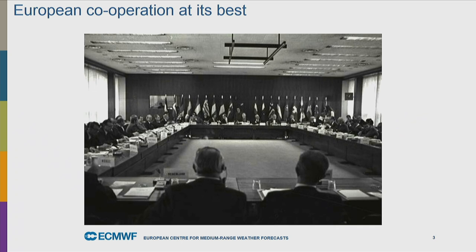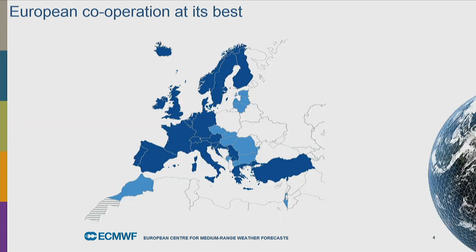It was quite bold in the early 1970s to say you could make ten-day forecasts, and there were actually some countries in Europe who said it was ridiculous and refused to join ECMWF. But enough countries signed up. The dark blue states on this map are full member states and the light blue countries are cooperating states, which means they can make use of most of our products and access many facilities but pay a reduced fee and do not have a seat at the council table. Most Western, Central and Eastern European countries are members or cooperating states.